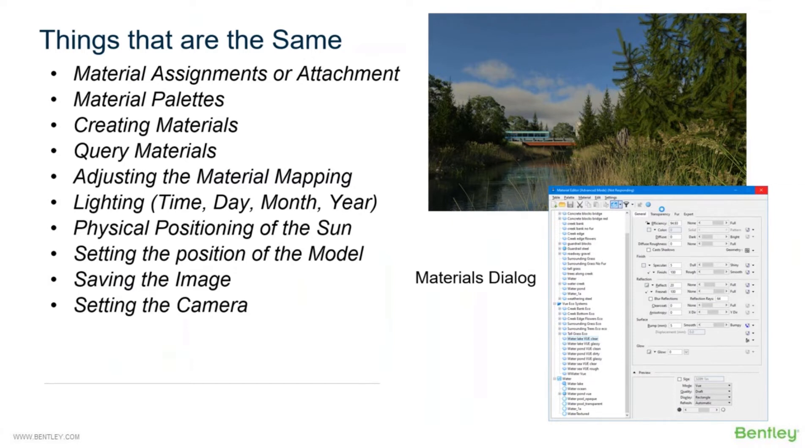I can still query materials inside of my MicroStation drawing. I can still adjust the material mapping, so if brick doesn't fall onto a side of a building quite properly, or if the expansion joints on a freeway don't work quite right, I can adjust that material map just like I did in V8i.